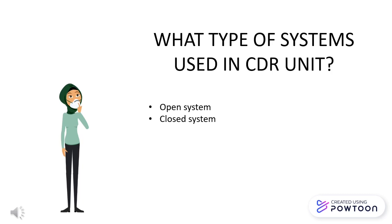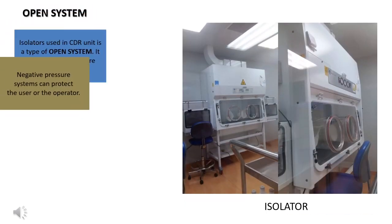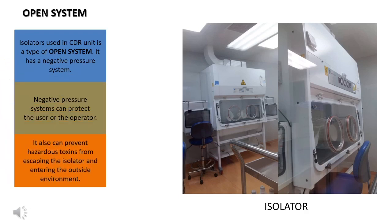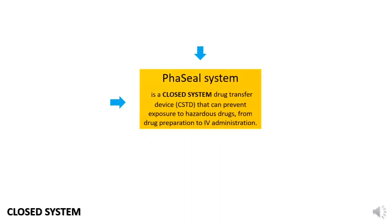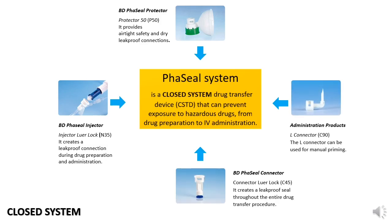What types of systems are used in the CDR unit? There are two types: open system and closed system. Isolators used in the CDR unit are a type of open system. They have a negative pressure containment system, which can protect the user or the operator because the pressure inside the isolator is less than the pressure in the clean room environment. This prevents hazardous toxins from escaping the isolator and entering the clean room or the outside environment. The closed system can prevent exposure to hazardous drugs from drug preparation to IV administration.